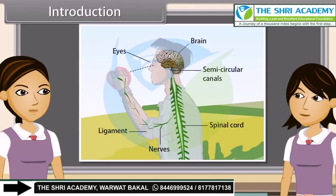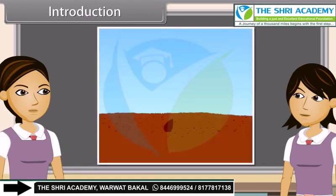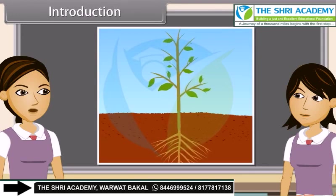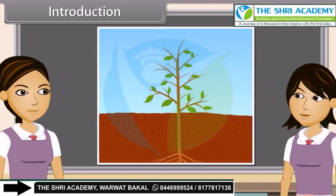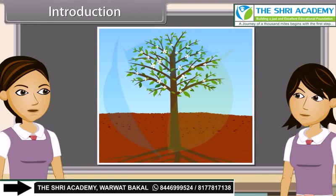As we already know, something is called living when a movement is observed in it. This movement can be due to growth, as in plants, where a seed germinates and grows. This movement in plants is stopped after a particular time.